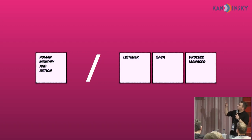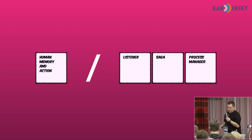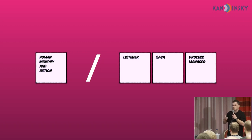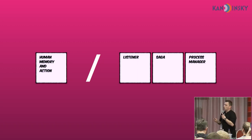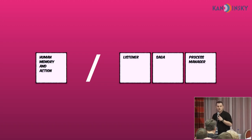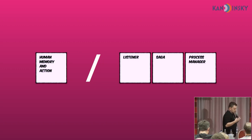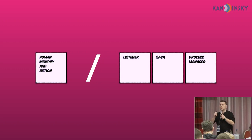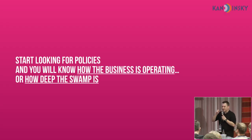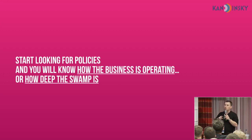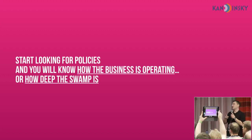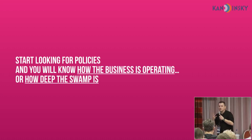From my perspective, during the event storming session — especially at the big picture level — looking for policies is extremely important. Using events, commands, actors, etc., we can visualize the flow, but we will probably not know how the business exactly works. Unfortunately, if we look for these policies, we will know how the business is really operating, and especially in established organizations, we will know how deep the swamp is.